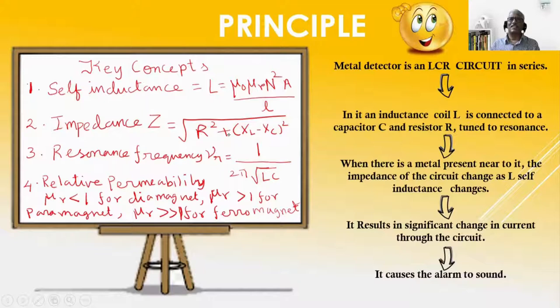When impedance increases, impedance is opposition to the flow of current. Naturally, the current falls from maximum value and the alarm is turned to on position. That is how metal detector works.